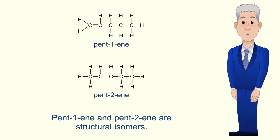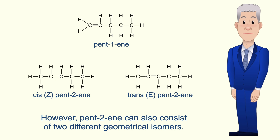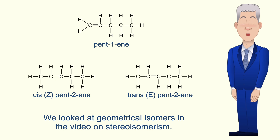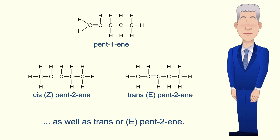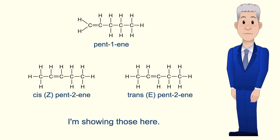Pent-1-ene and pent-2-ene are structural isomers. However, pent-2-ene can also consist of two different geometrical isomers, and we looked at geometrical isomers in the video on stereoisomerism. We can make cis or Z pent-2-ene as well as trans or E pent-2-ene, and I'm showing those here.